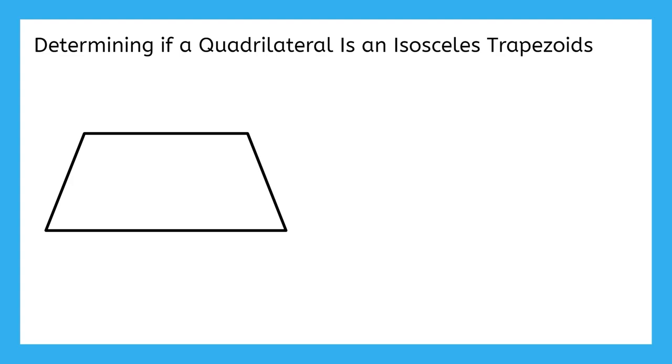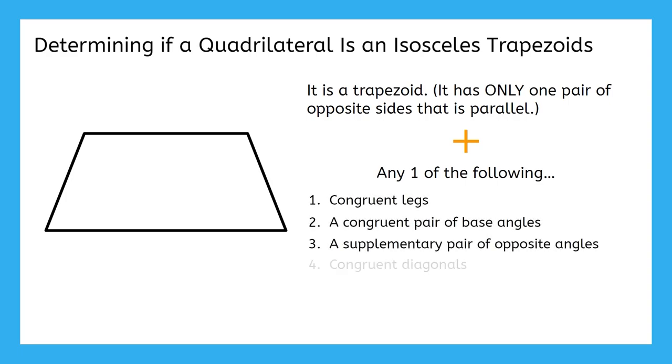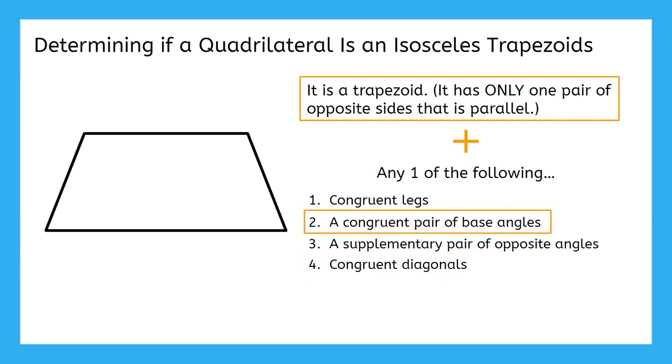In order to show that a quadrilateral is an isosceles trapezoid, you first have to know that it's a trapezoid at all. That means you need to know that only one pair of your opposite sides are parallel. Once you know this, then you can combine it with any one of these properties of isosceles trapezoids. For example, if I have a trapezoid with congruent diagonals, then I know it must be an isosceles trapezoid. Or if I have a trapezoid with a congruent pair of base angles. And so on and so on.